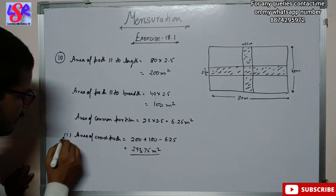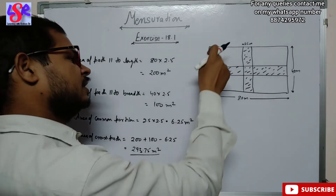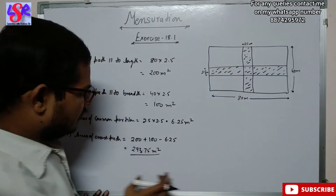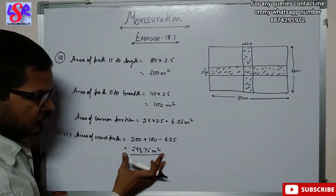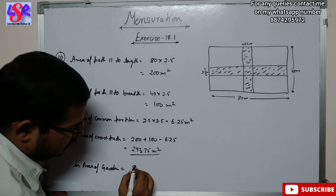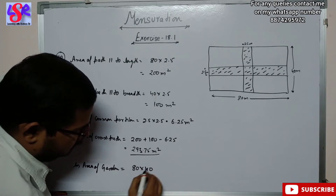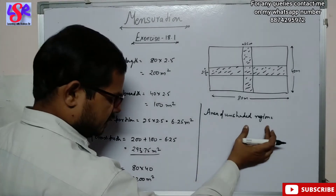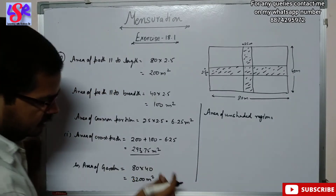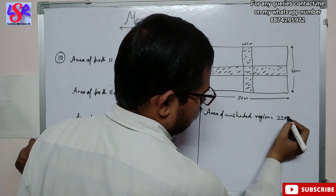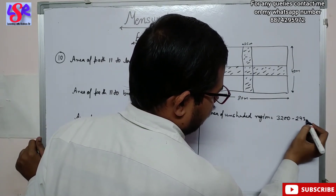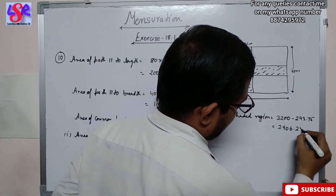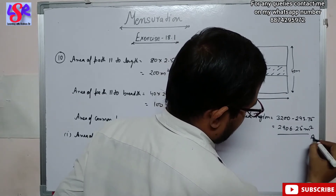In the second part we have to calculate the area of the unshaded portion. We calculate the total area of the garden and subtract the area of the cross path. Area of garden equals 80 into 40, that is 3200 meter square. Area of unshaded region equals 3200 minus 293.75, which gives 2906.25 meter square.